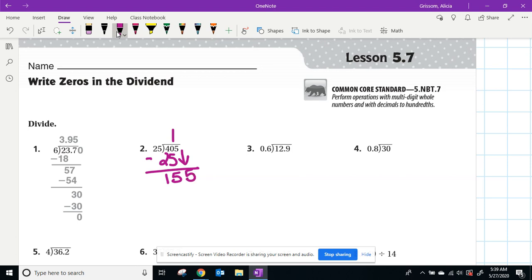We bring down the five from the dividend and we have 155. How many times does 25 go into 155? I'm going to pause and let you complete that calculation. Okay. If you came up with six, that is correct.